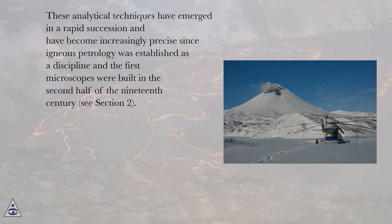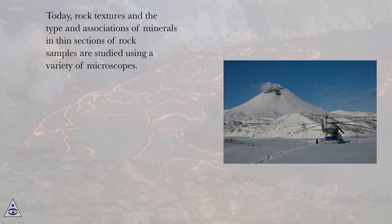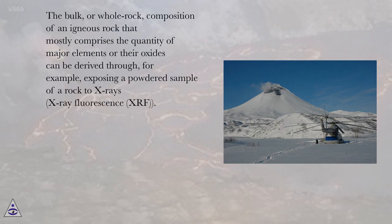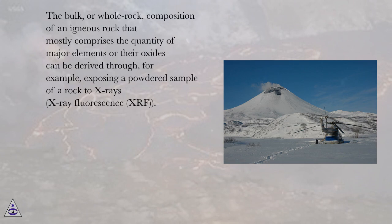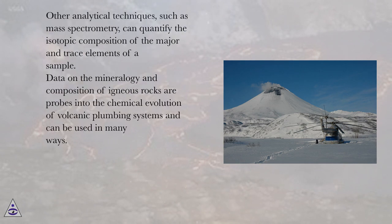These analytical techniques have emerged in rapid succession and have become increasingly precise since igneous petrology was established as a discipline and the first microscopes were built in the second half of the 19th century. Today, rock textures and the type and associations of minerals in thin sections are studied using a variety of microscopes. The bulk or whole-rock composition of an igneous rock — comprising the quantity of major elements or their oxides — can be derived through, for example, X-ray fluorescence (XRF). Other analytical techniques such as mass spectrometry can quantify the isotopic composition of major and trace elements of a sample.